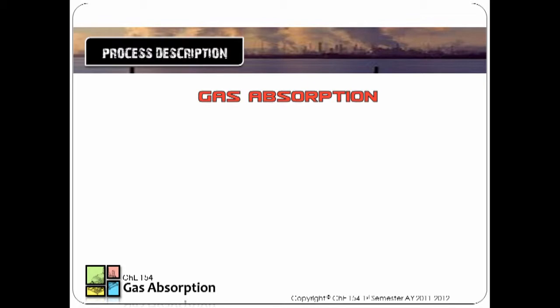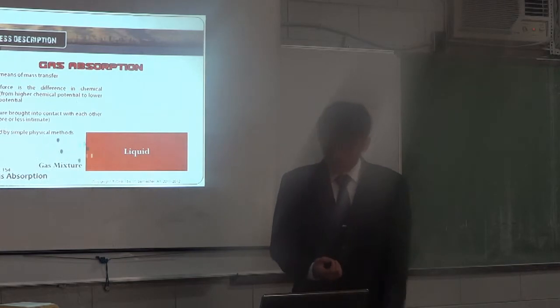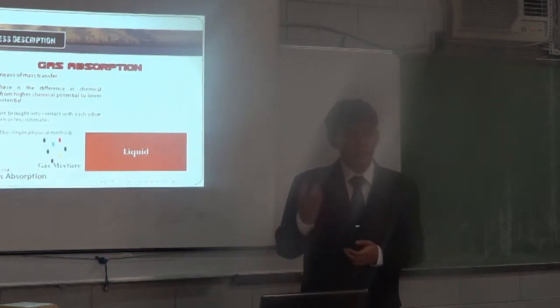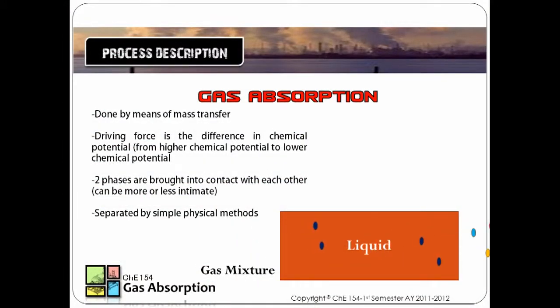Now for a brief description of the gas absorption process. To begin with, we have two phases which are commonly the liquid phase and the gas phase. They are contacted in a gas absorption column. You can find the liquid phase on top and the gas phase is usually situated at the bottom.